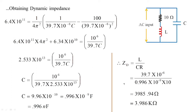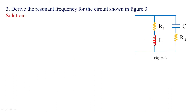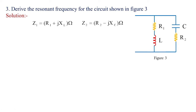I hope you understood the step-by-step process to obtain capacitance, inductance, and finally the dynamic impedance from the given parameters. In figure 3, we need to calculate the resonant frequency. Unlike the previous problem, a resistor is added in series with the capacitor. We need to follow the same procedure used in the previous class.